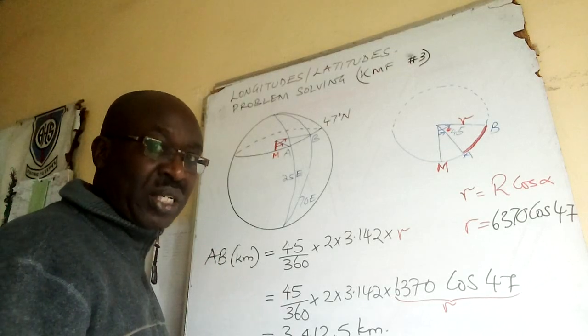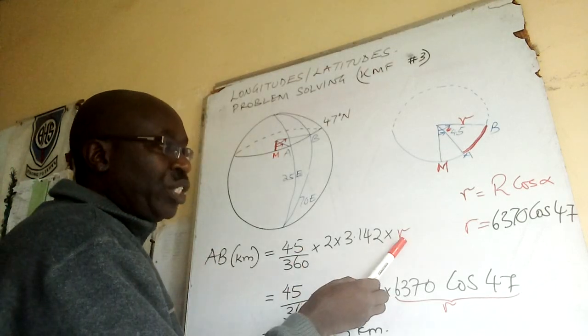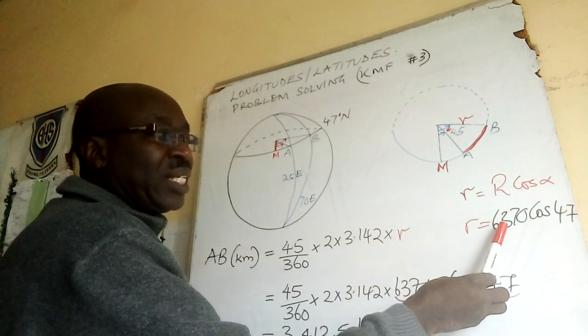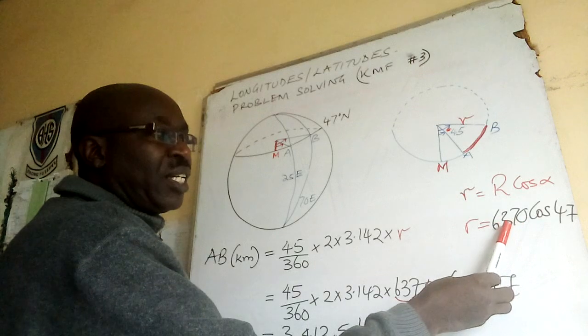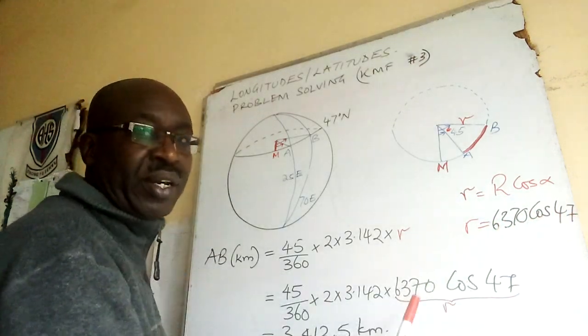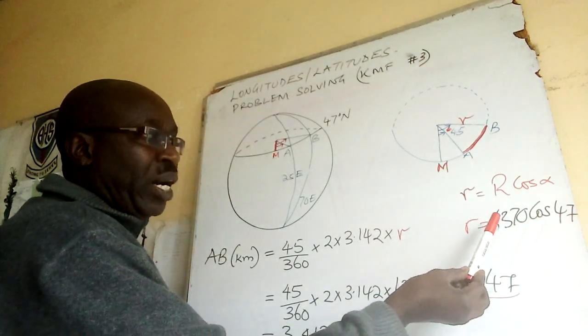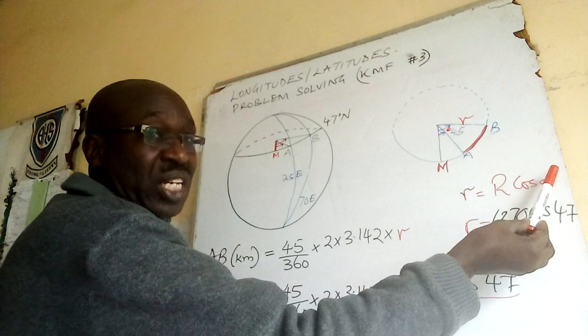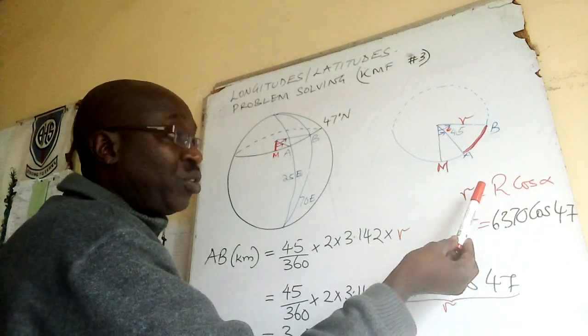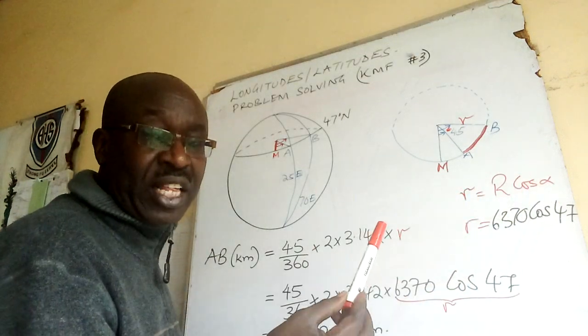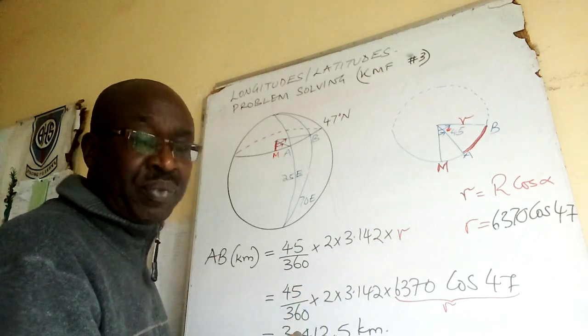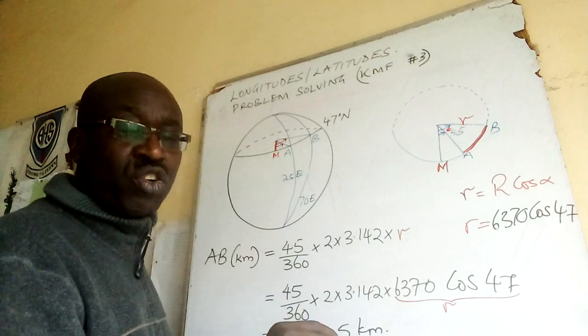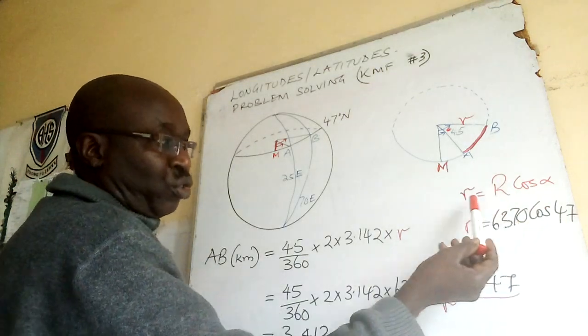In my previous lesson I explained that. So we shall be substituting small r with 6370 kilometers cos 47. The capital R times cos alpha gives you the value of small r. It is very rare that you will be given small r. In case you are given small r you use it, if not you have to apply this relationship.